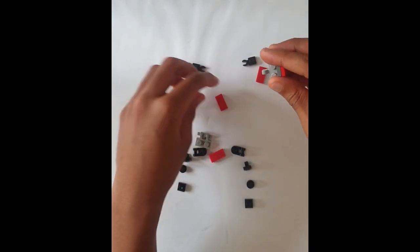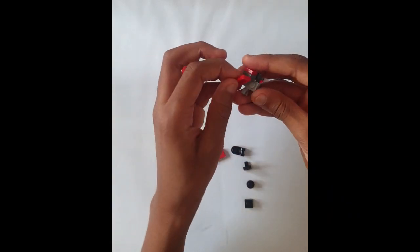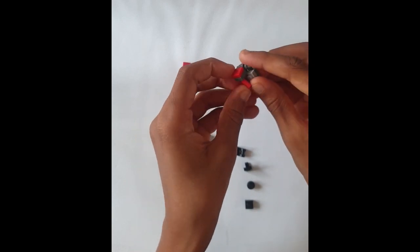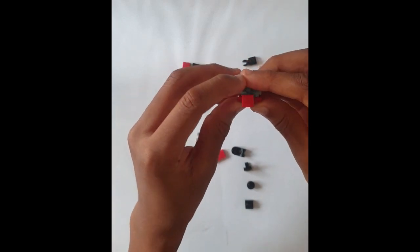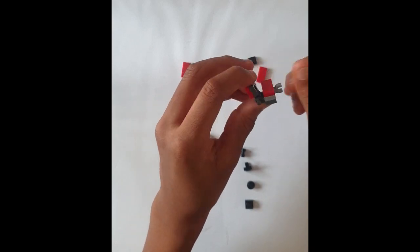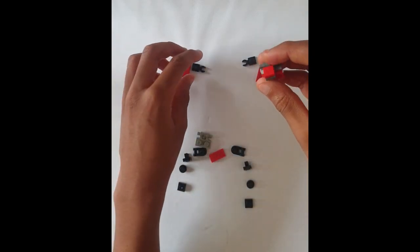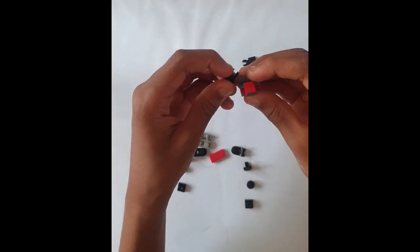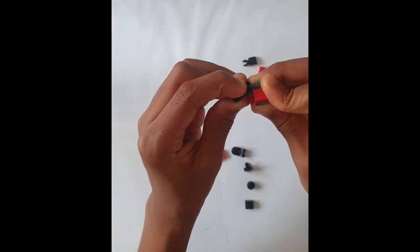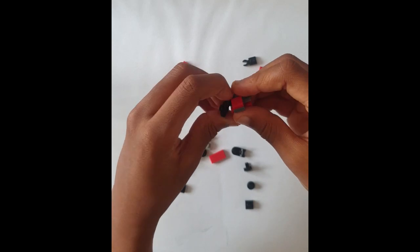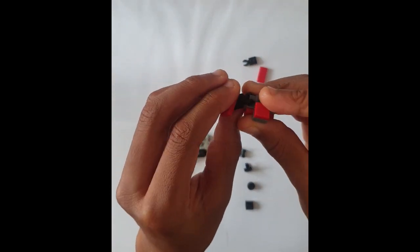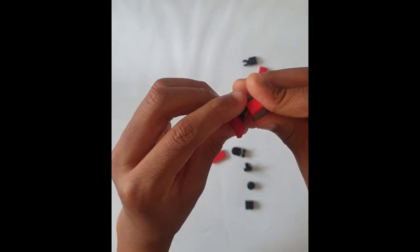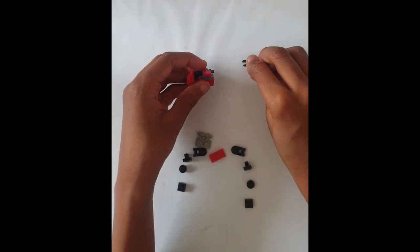Then put a 1x2 tile on top of that so you have a smooth base. Then put a 1x1 with a handle that's flat and put on a 1x1 tile, a 1x2 tile, and then do that again.